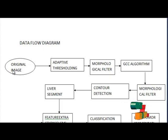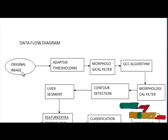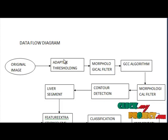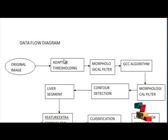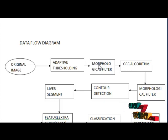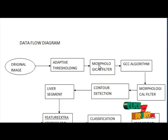This is the block diagram of our project. First, we load the original abdominal images. The next step is adaptive thresholding, which is used to separate the pixels of the liver from the rest of the image. According to histograms of the abdominal CT scan, values are fixed in the histograms of the liver. The next step is the morphological filter, which is applied to perform the fill opening operation.